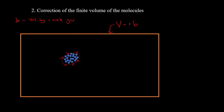For n moles, we shall have n times B. So we have to subtract that volume, because we want the actual volume these molecules can freely move through. We have to remove the volume occupied by the gas molecules — that is why we write V minus nB. This is the free volume in which these molecules can traverse. In the ideal gas equation, we assumed the whole volume of the container is available to the molecules, which is not true, so we must subtract.